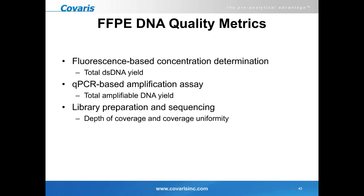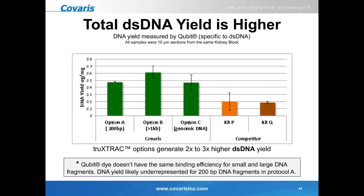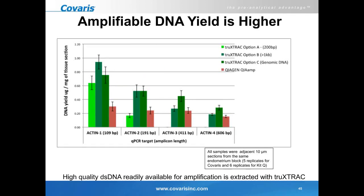Three metrics assess FFPE DNA quality: fluorescent-based yield determining total double-stranded DNA; QPCR-based amplification assays showing total amplifiable DNA yield, which closely resembles the effect of sequencing because it is polymerase-based; and library preparation and sequencing as the ultimate QC method. Comparing our three options against Qiagen and Promega, we easily get two- to three-fold excess double-stranded DNA yield. Using QPCR, all three options routinely generate at least three- to six-fold higher amplifiable DNA yield compared to the Qiagen kit.